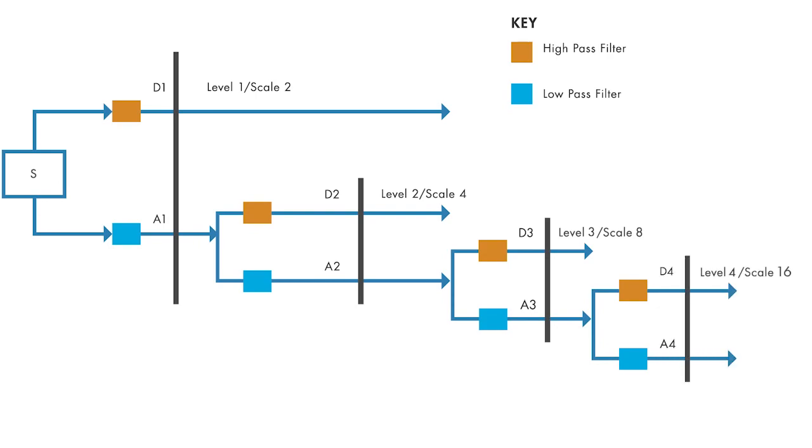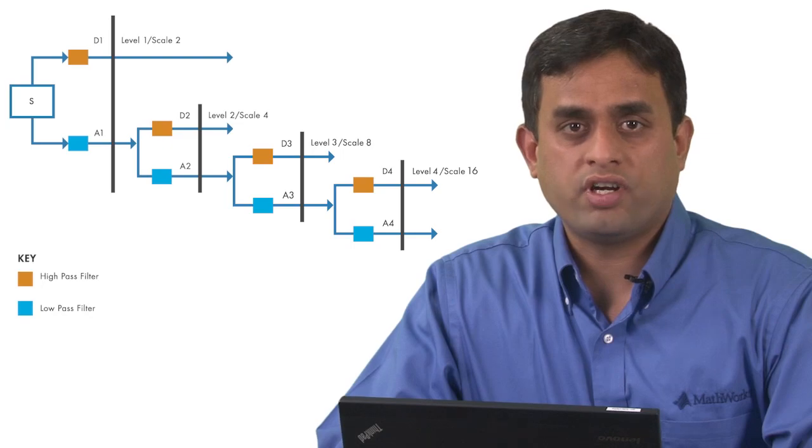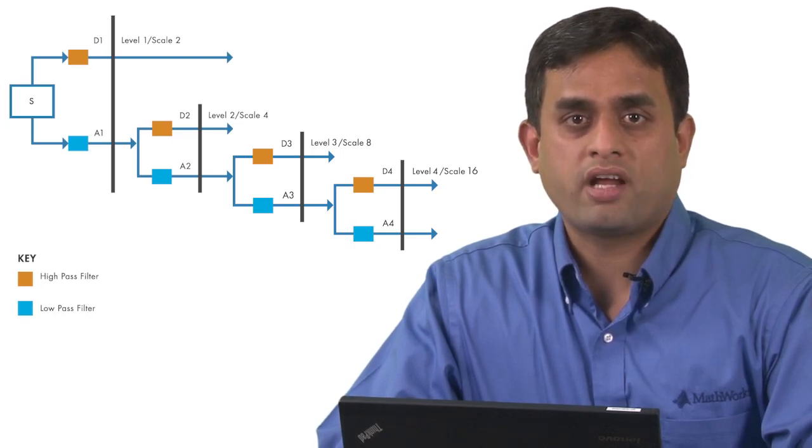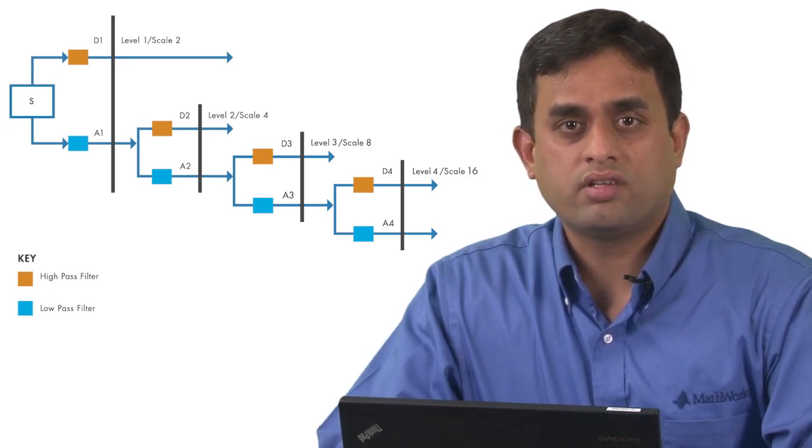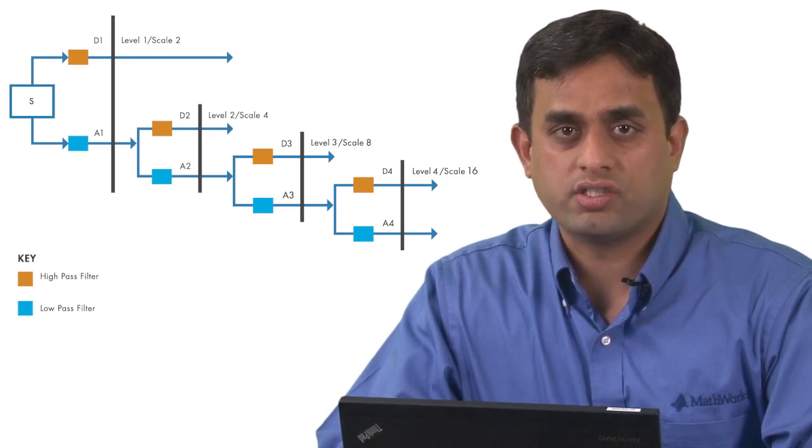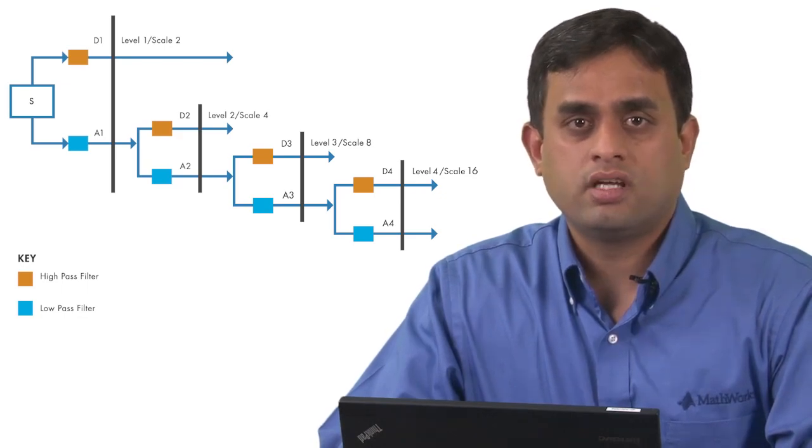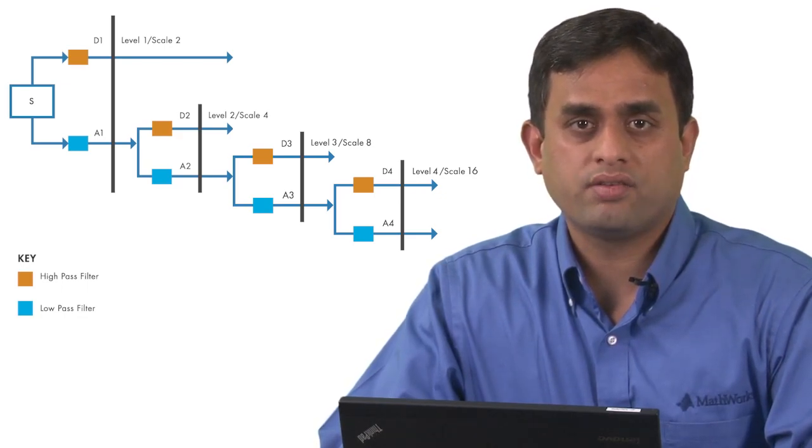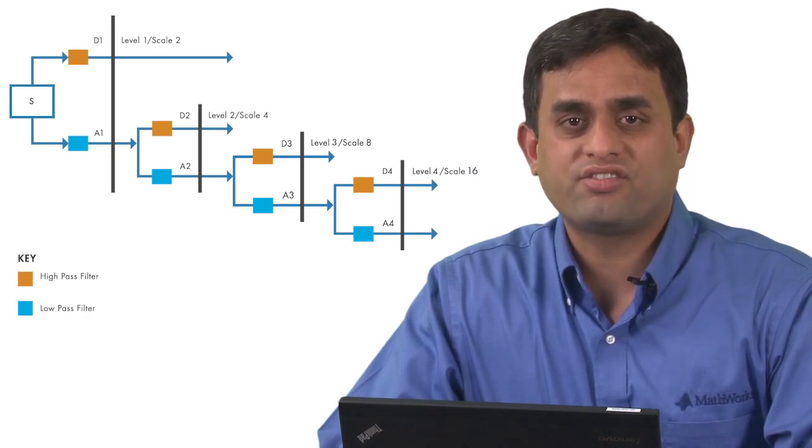The length of the coefficients in each subband is half of the number of coefficients in the preceding stage. With this technique, you can capture the signal of interest with a few large-magnitude DWT coefficients, while the noise in the signal results in smaller DWT coefficients. This way, DWT helps analyze signals at progressively narrower subbands at different resolutions. It also helps denoise and compress signals.